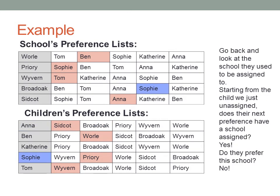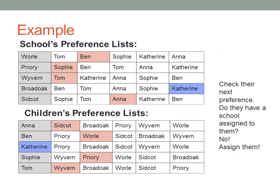Now we must go back and find another student for Broad Oak. Starting with the student after Anna, Broad Oak's next preference is Sophie. Sophie is already assigned to Priory, so we check if she prefers Broad Oak. We find that she doesn't, so we move on. Broad Oak's next preference is Catherine. Catherine is not yet assigned to a school, so we assign her to Broad Oak.